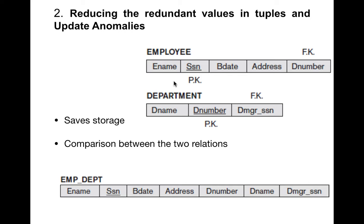Keeping the schema in two separate relations is a good practice — we'll see why. Imagine if we were to combine these two relations into a single relation. If you take a natural join of these two tables — the d_number field is common in both — this is the result you would get: ename, SSN, birth date, address, d_number from employee, and d_name and manager SSN from department, forming the combined EMP_DEPT relation.